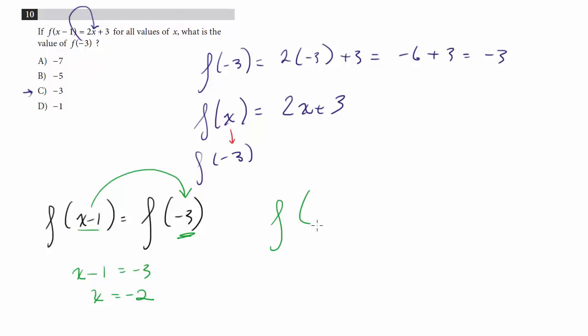So really what you have here is f of negative 2 minus 1. This is the same thing as f of negative 3. And now this is the x value which you then plug in to your equation. So it's going to be 2 times negative 2 plus 3. So this is negative 4 plus 3, which is negative 1. That's choice D.